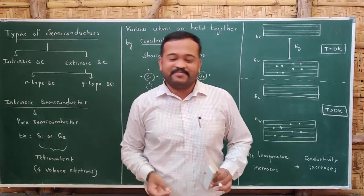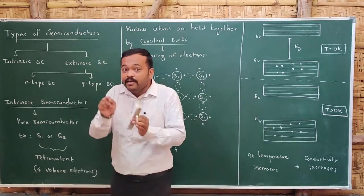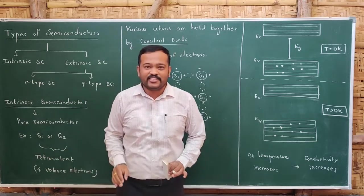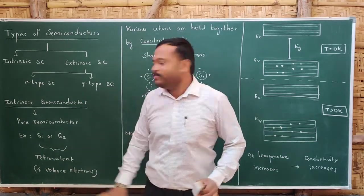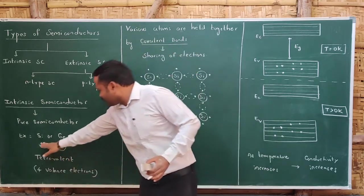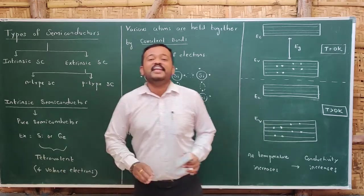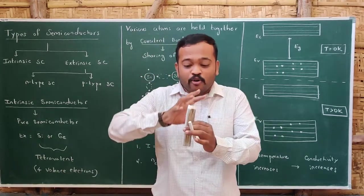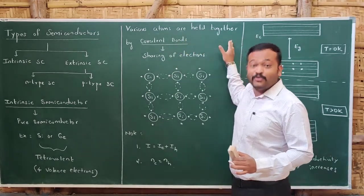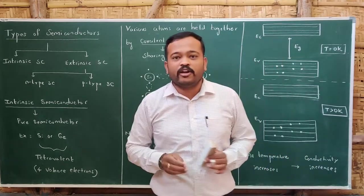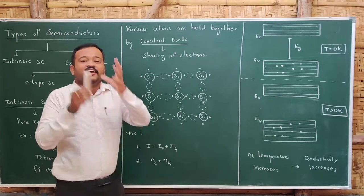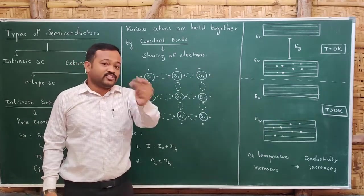Let us start with intrinsic semiconductors. Intrinsic semiconductors are inborn semiconductors, meaning they are pure semiconductors. For example, pure silicon and pure germanium are intrinsic semiconductors. Silicon and germanium are tetravalent in nature, meaning these atoms have four valence electrons. The various atoms are held together by covalent bonds, which is a bond formed by sharing of electrons.